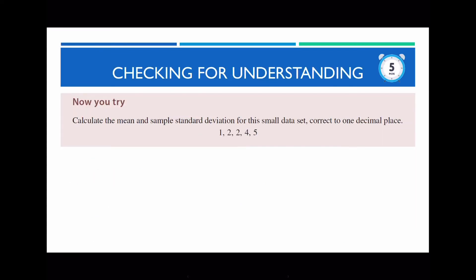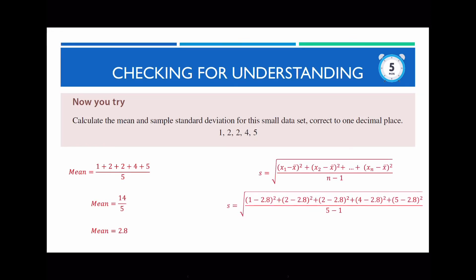Now I'd like you to have a go at answering this question, referring back to the example we just looked at. If you've done this correctly, your mean should be equal to 2.8. Once you've found the mean, substitute it into the formula, and you should get an answer of 1.6 rounded to one decimal place.